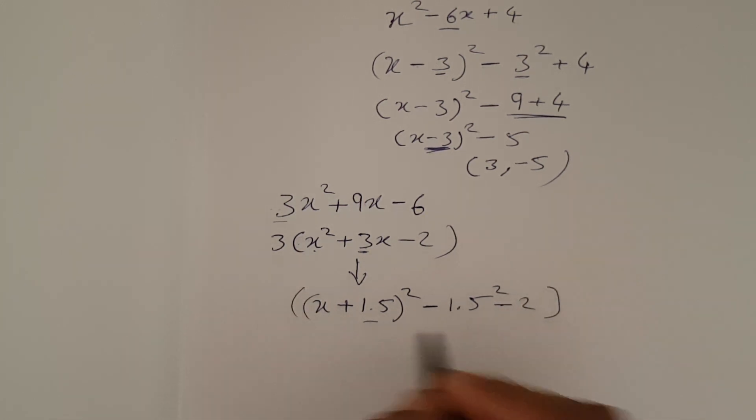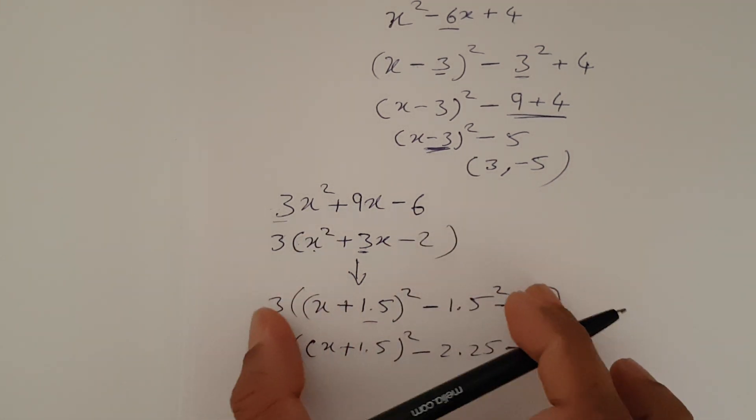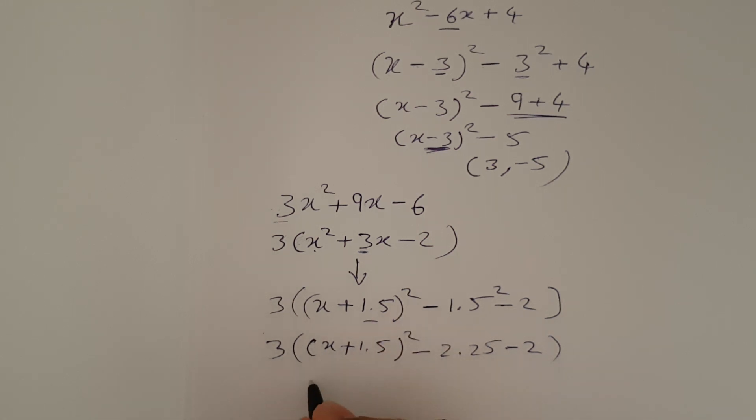And there should be bracket 3. After that, just complete the problem. 3(x + 1.5)² minus 2.25 minus 2. Square of 1.5 is 2.25. You can use a calculator. Minus 2. Bracket. The 3 remains outside. We are doing everything inside the bracket. Complete that, which is 4.25.